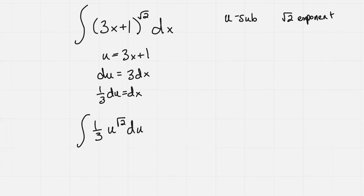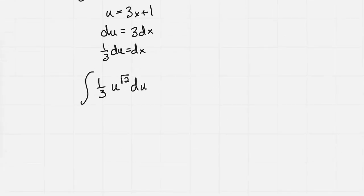And now I can integrate, find the antiderivative. So the 1 third will just come out in front. The antiderivative of u to the square root 2, that's the square root 2 plus 1. So that'll be u square root 2 plus 1 all over square root 2 plus 1. And then this is a plus c.